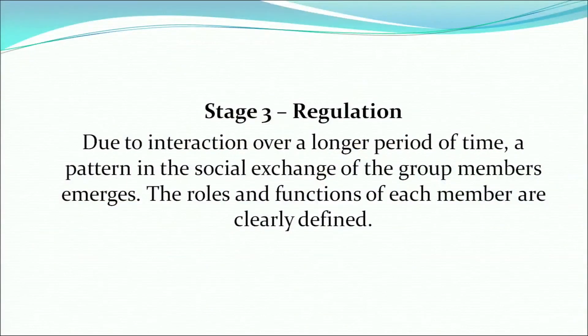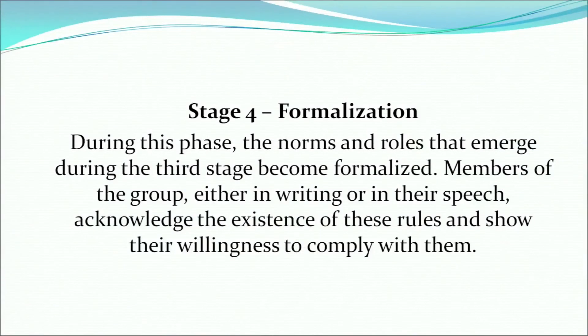The third stage is regulation. Due to interaction over a longer period of time, a pattern in the social exchange of group members emerges. The roles and functions of each member are clearly defined — each member knows how they are going to operate in the group. The last stage is formalization: the norms and roles that emerge during the third stage become formalized. Members, either in writing or in speech, acknowledge the existence of these rules and show their willingness to comply with them.